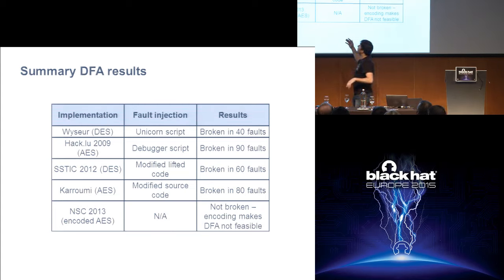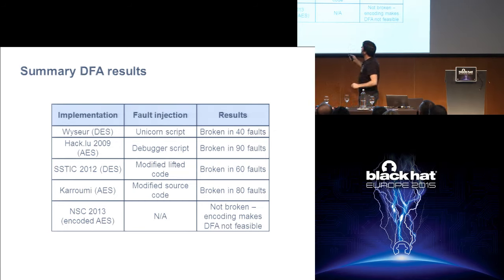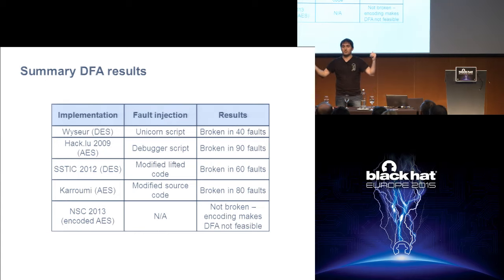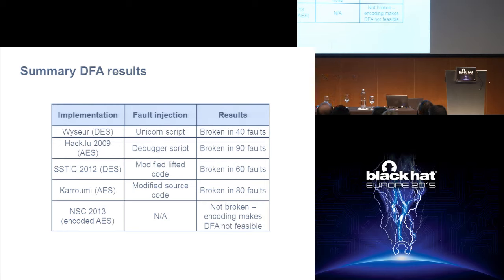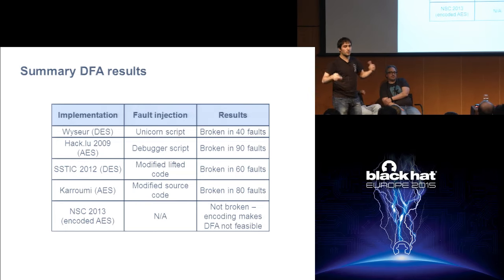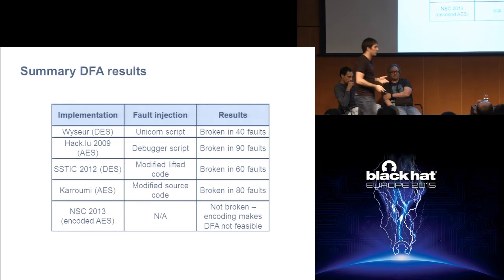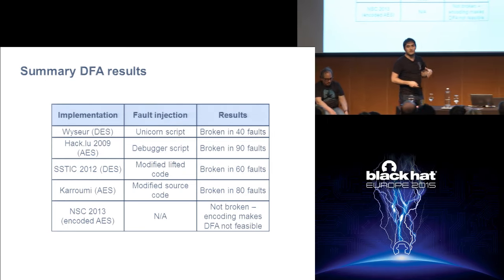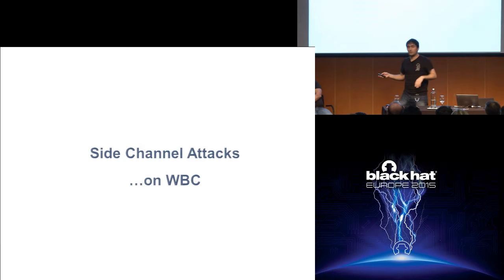We also compared this for other public white boxes on the internet. For the main challenge, about 40 faults were enough to get the key in the time it took to go through two slides. For the other challenges, similar numbers applied. The exception was one challenge with external encodings — the output is randomized with an encoding we don't know, so we cannot solve equations with it. This gives a hint of how external encodings can defend against this kind of attack.